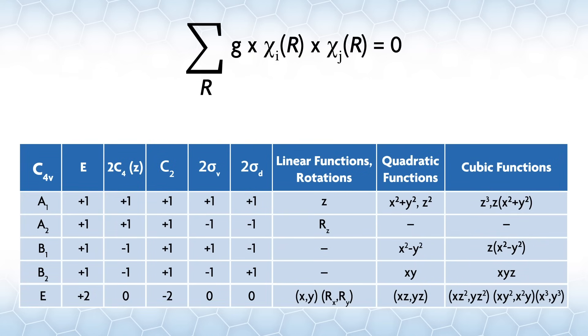The irreducible representations are orthogonal to one another. Mathematically, that means for two irreducible representations i and j, summed across all classes are the number of operations in the class g times the character, which is usually given the symbol chi in the ith variable, times the character of the jth rep is equal to zero.